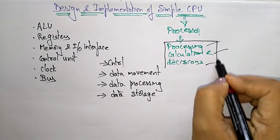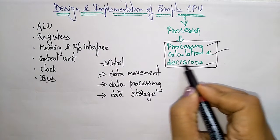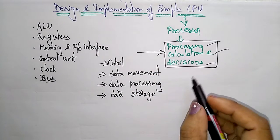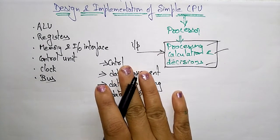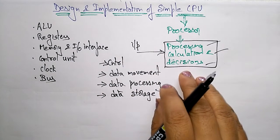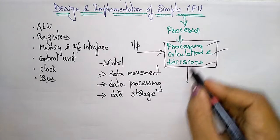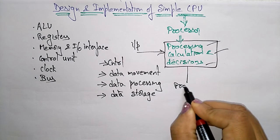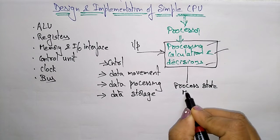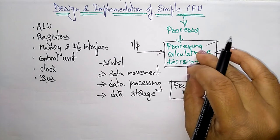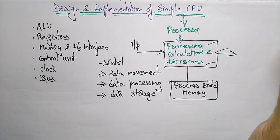The CPU, or processor, performs processing, calculations, and decision operations. We give it an input — this may be from sensors or any input device connected. When the user gives instructions, the processor performs operations and decisions. The processor is connected to memory, and whatever output the processor produces is sent to output devices such as CRT displays or lights.